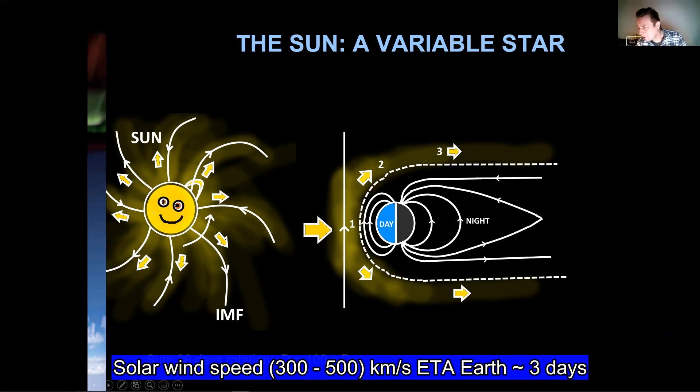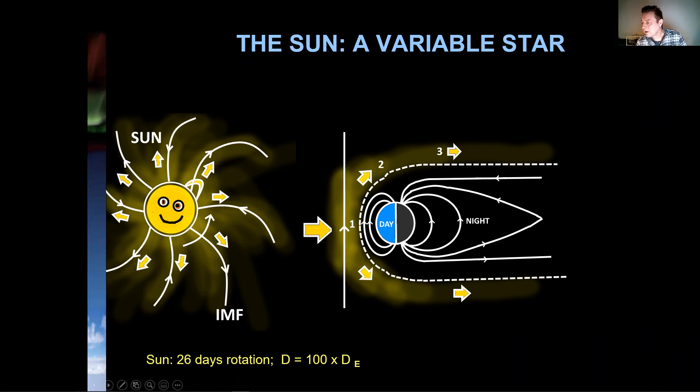In this case, it's pointing upwards and the solar wind just blows past the system because there is no connection between these magnetic field lines. So you get a compression of Earth's magnetic field on the day side here. And the magnetic field of the Earth is dragged into a long tail on the night side.